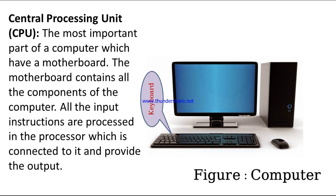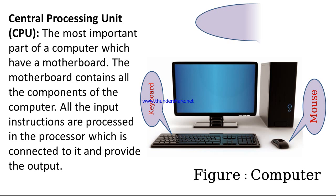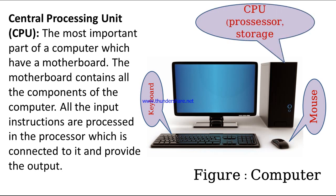This is the keyboard and this is the mouse — these are input devices. This is the CPU, which consists of a processor and storage device. And this is the monitor — it is an output device.